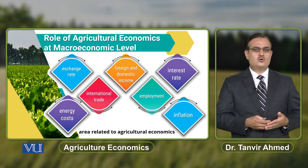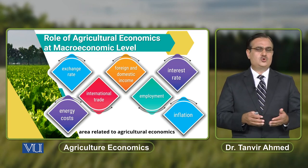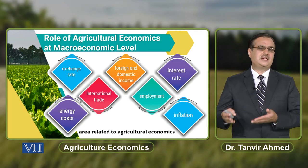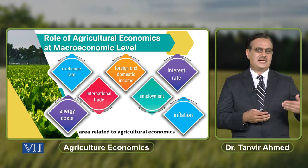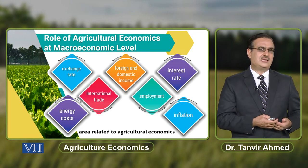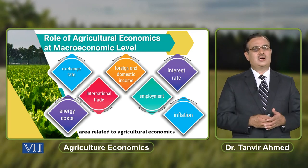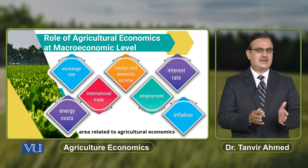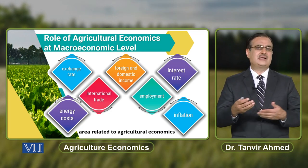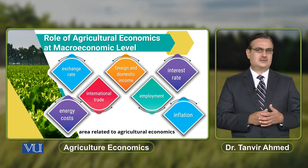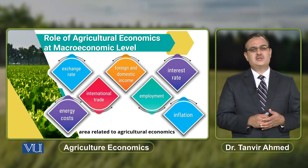Phir isi pattern pe, agar hum macro level pe baat keray — there is an increase in the interest rate. Because of that increase in interest rate, jo aapke liye credit hai, usage of credit by the farmer will become expensive. Aur jab woh expensive hoga, it might be possible farmer uses less quantity of credit, and he will use less quantity of input to produce agricultural output. Again ultimately there is a decrease in agricultural output. At macroeconomic level, jo bhi aapke paas macro variables hain and agricultural output — these macro variables and agricultural output are interrelated with each other. Kehi pe woh aapke agricultural output ko impact karega, kehi pe aapka agricultural output macroeconomic variables ko effect karega.